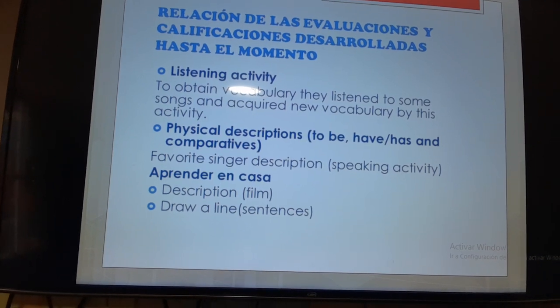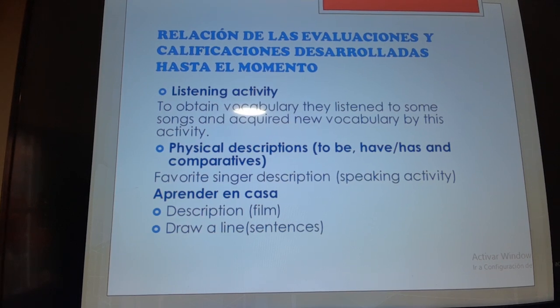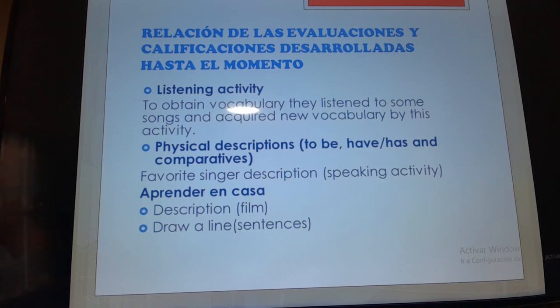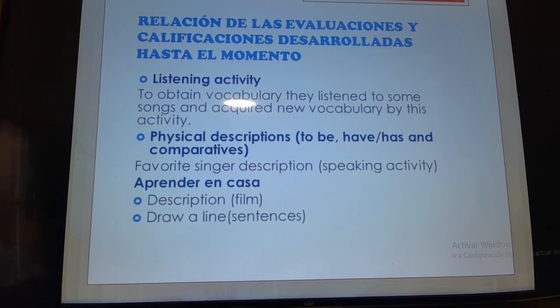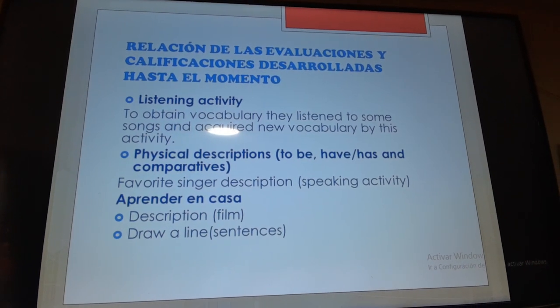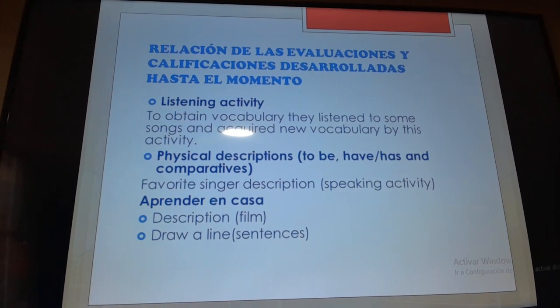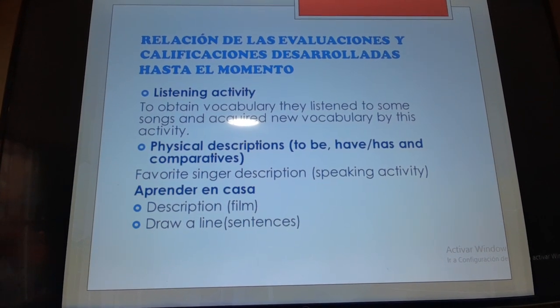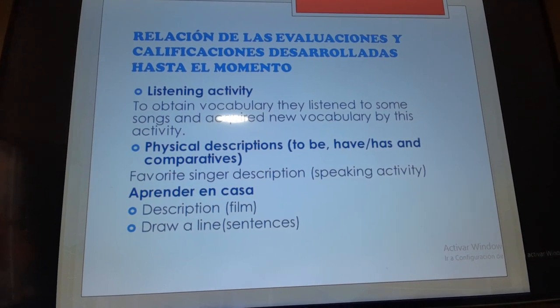Unas palabras que ellos obtuvieron escuchando una serie de canciones. En segundo lugar, unas descripciones que ellos hicieron. Hablaron ellos mismos, hicieron unas presentaciones los estudiantes. Por último, tenemos dos notas de la estrategia aprender en casa. La primera es la descripción que hicieron sobre los dos actores favoritos de una película, y la segunda es unir de una imagen a un adjetivo, un color, que fue la segunda actividad.